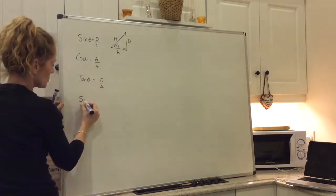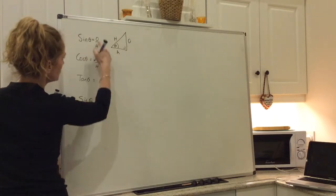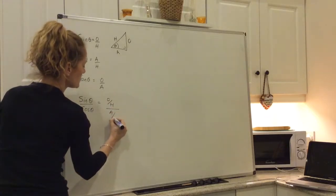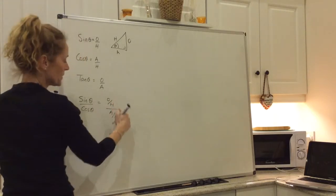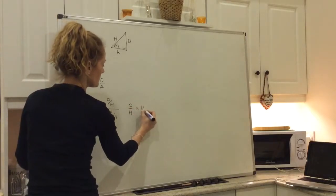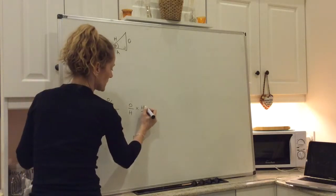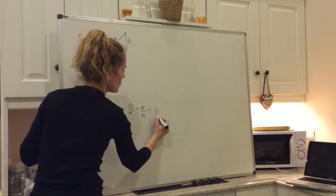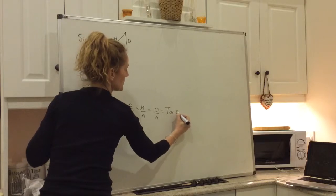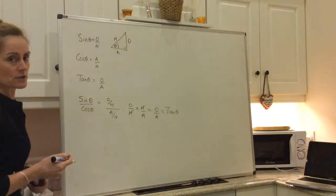So the first thing I want to show you is that sine theta over cosine theta is equal to opposite over hypotenuse divided by adjacent over hypotenuse. One fraction divided by another is the fraction multiplied by the inverse, or the reciprocal. So H divides out on top and on the bottom, so we get O over A. And O over A is tan theta. So sine theta divided by cosine theta is equal to tan theta.